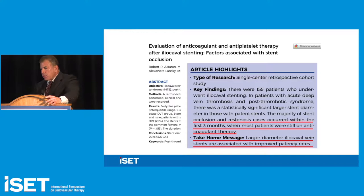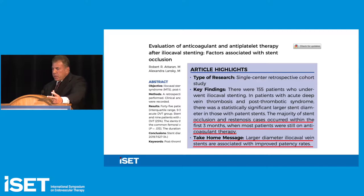One study looked at patients with stents in the acute DVT group, the post-thrombotic group, and the May-Thurner or non-thrombotic group. The take-home message was that occlusions occur early if they occur, and stent diameter — stent size — is the most important variable for stent thrombosis.